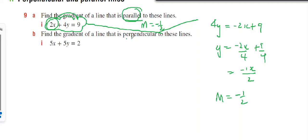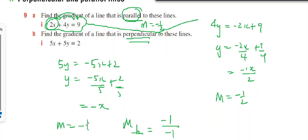For the gradient that is perpendicular, I need to work out this gradient first. So 5y equals minus 5x plus 2. Y equals minus 5x/5 plus 2/5, which is negative x. Therefore, the gradient is negative 1. The perpendicular gradient will be negative 1 divided by negative 1, flipped upside down, so it's positive 1.